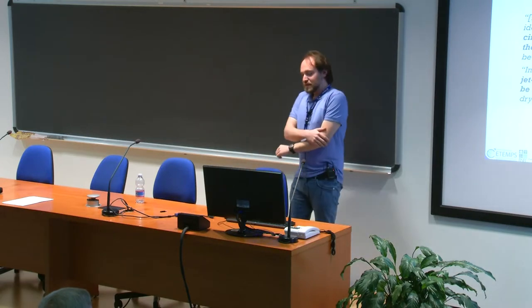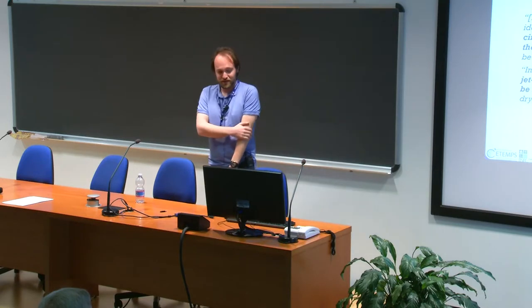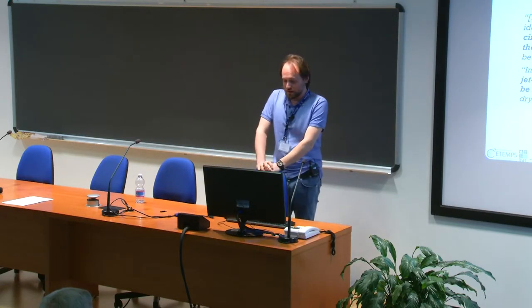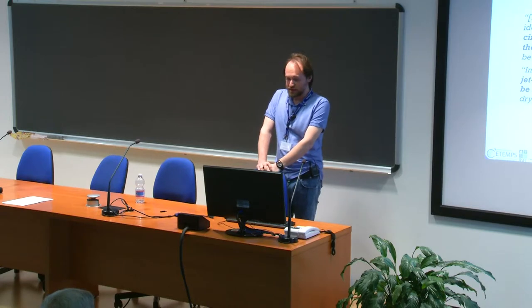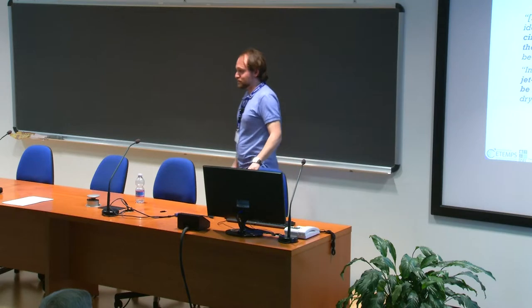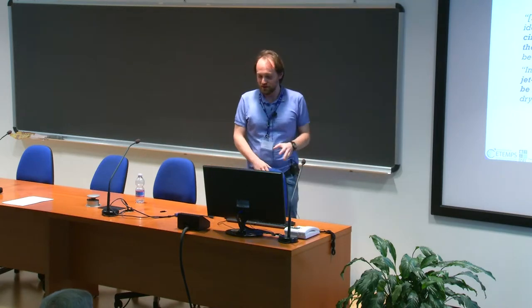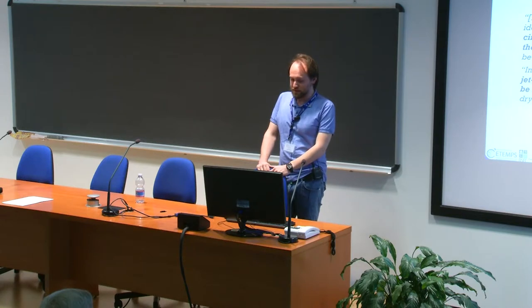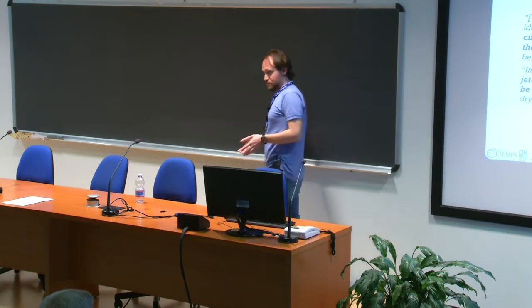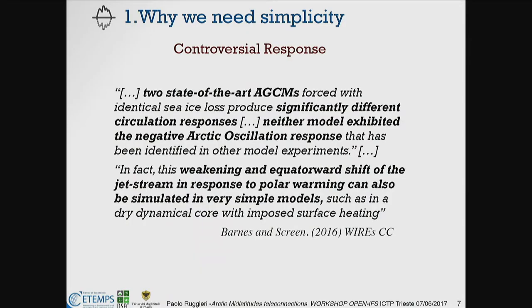On the other hand, we also need simplicity, because state-of-the-art models essentially disagree. Recently these authors pointed out that state-of-the-art AGCMs forced with identical sea ice loss produce significantly different circulation responses, and none of them was able to reproduce the negative Arctic Oscillation response found by many model experiments. Simple models, on the other hand, are able to show the weakening and equatorward shift of the jet stream, which can also be used to understand why the Warm Arctic Cold Continent pattern arises.